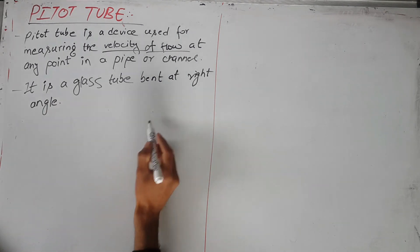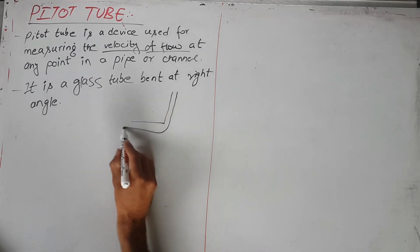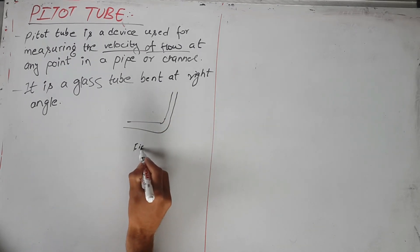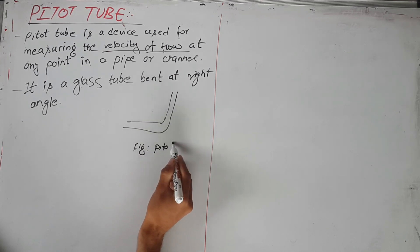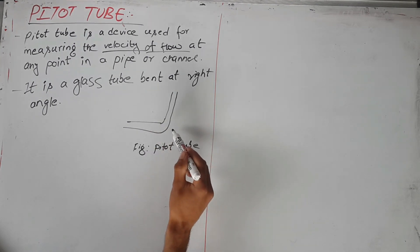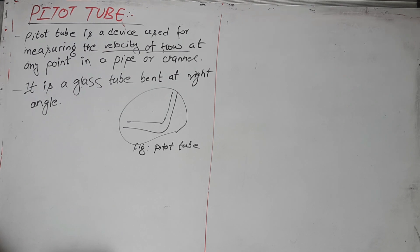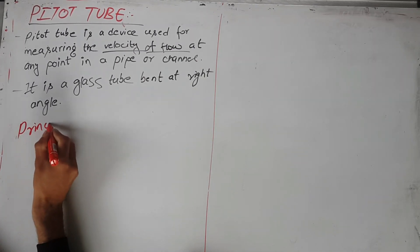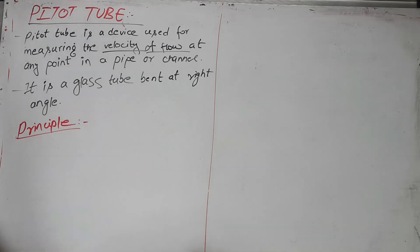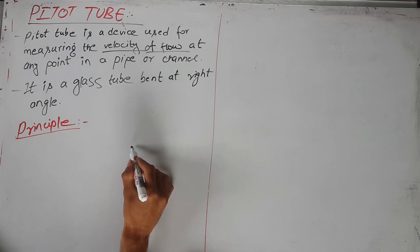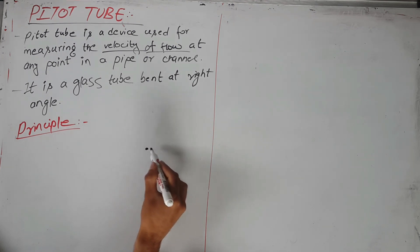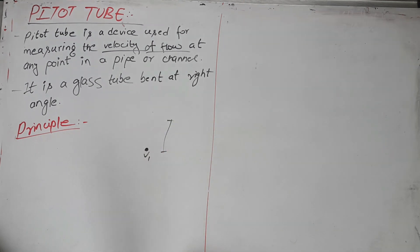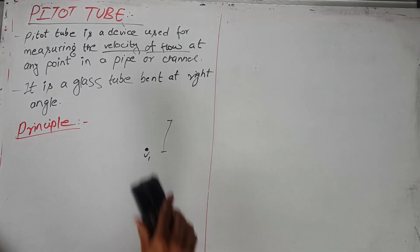The pitot tube is a tube bent at a right angle. Here is the figure of the pitot tube. It is used to measure the velocity of flow at any point. The principle is: if the velocity at any point becomes zero, that velocity gets converted into potential energy. This is the principle of the pitot tube.